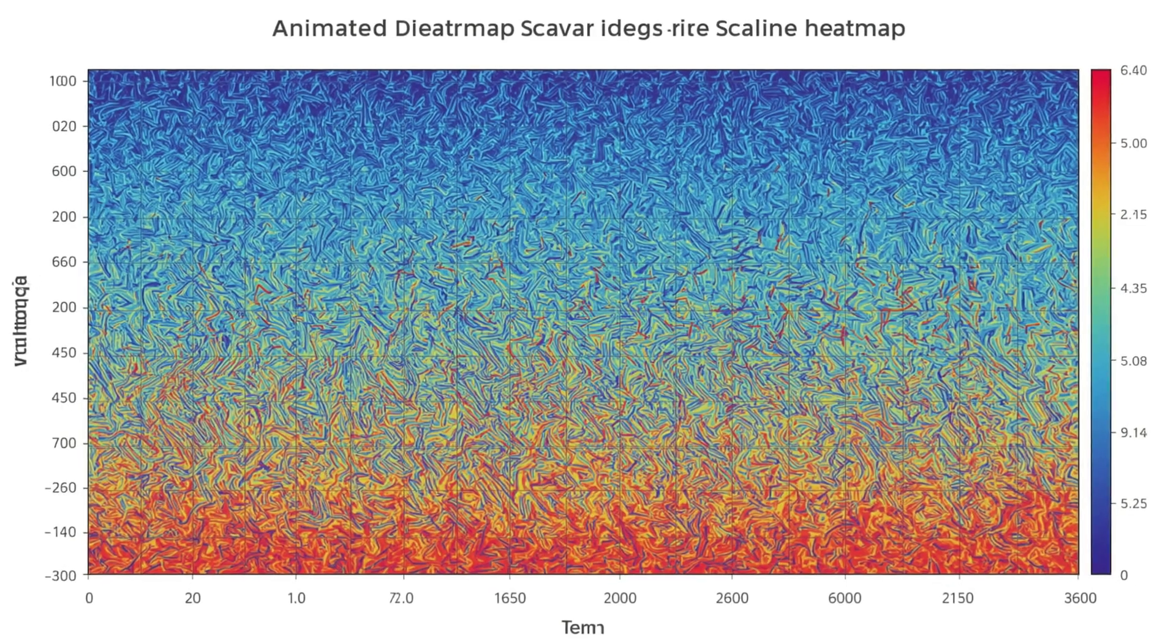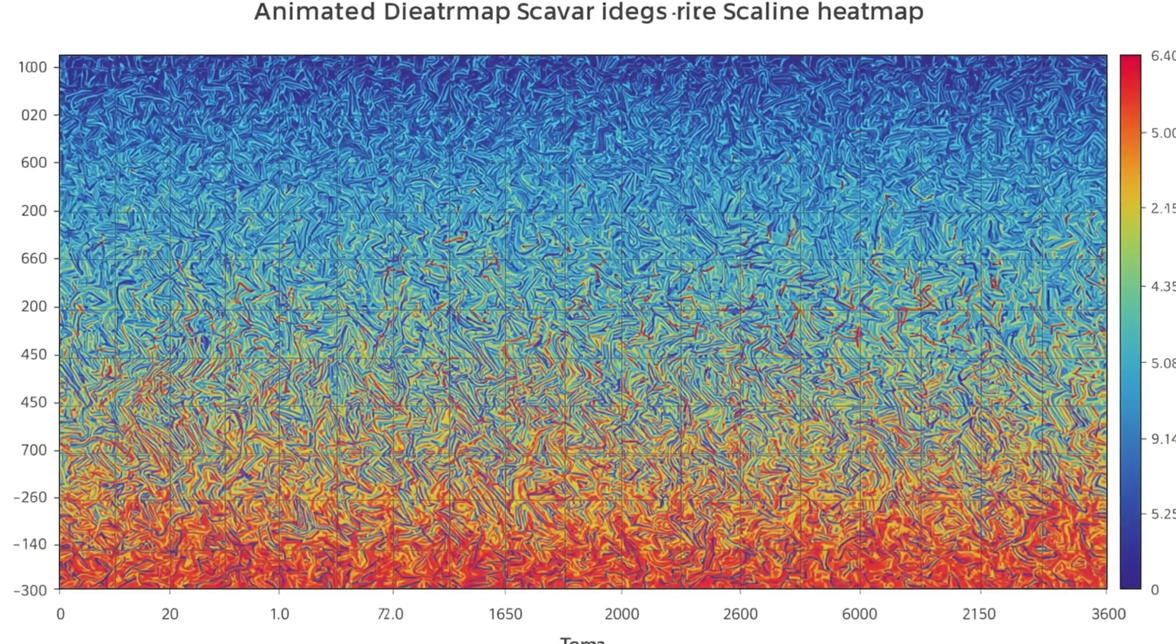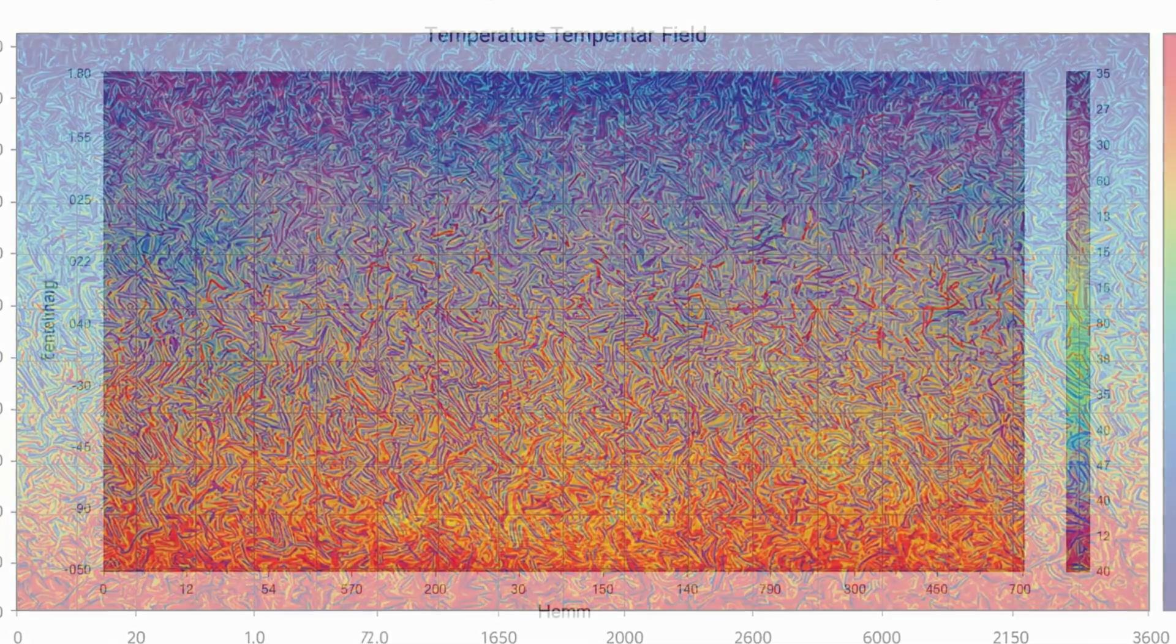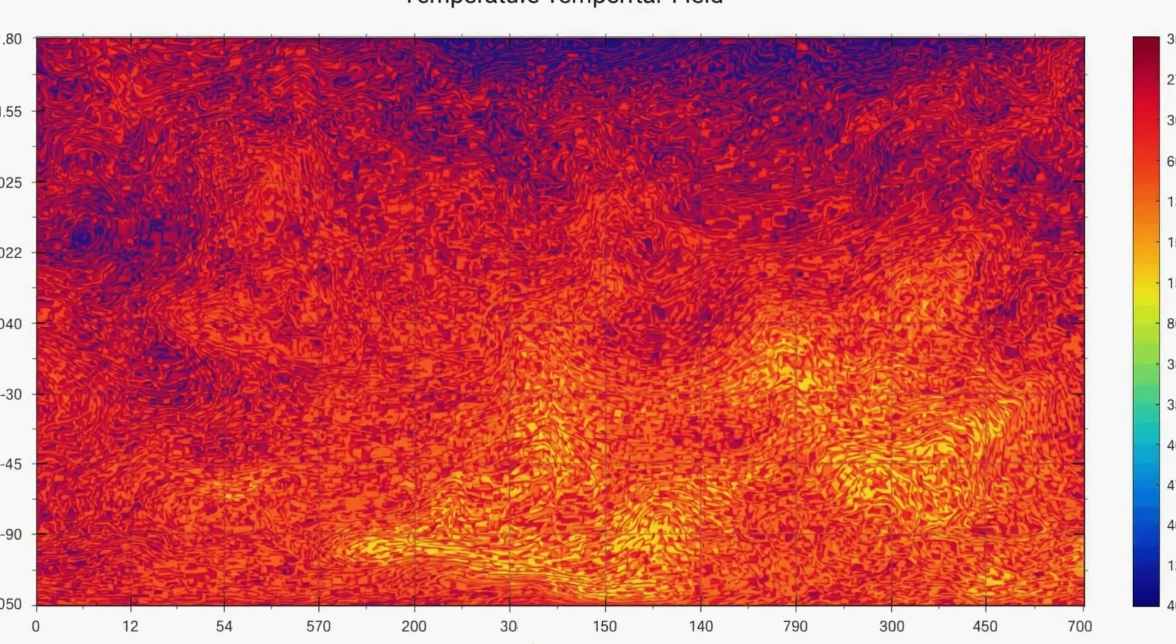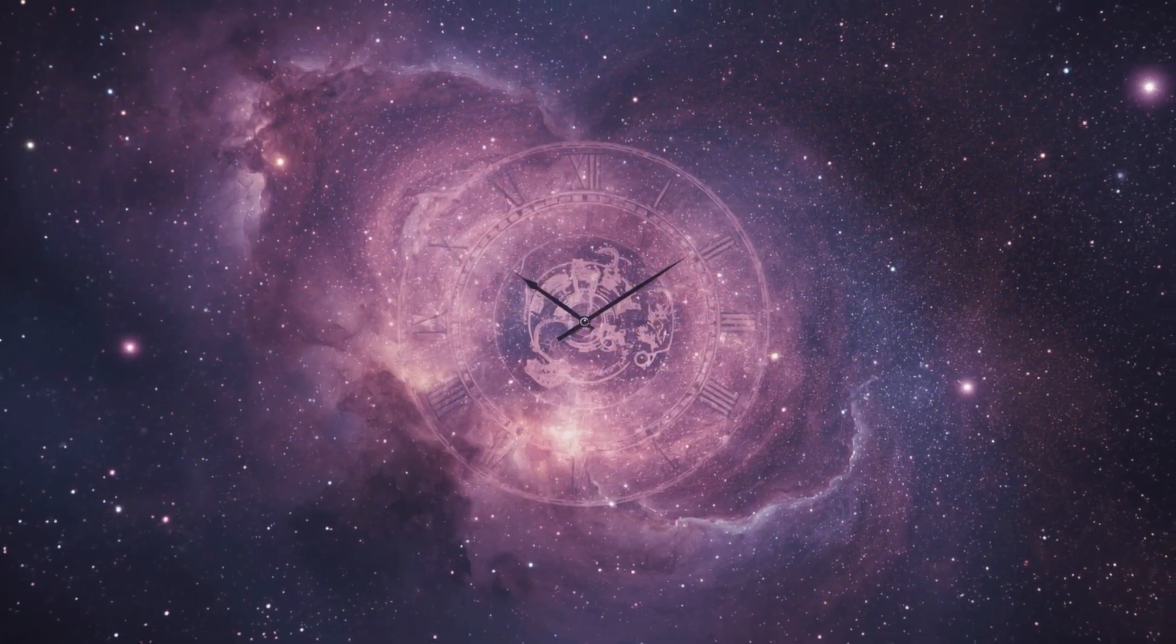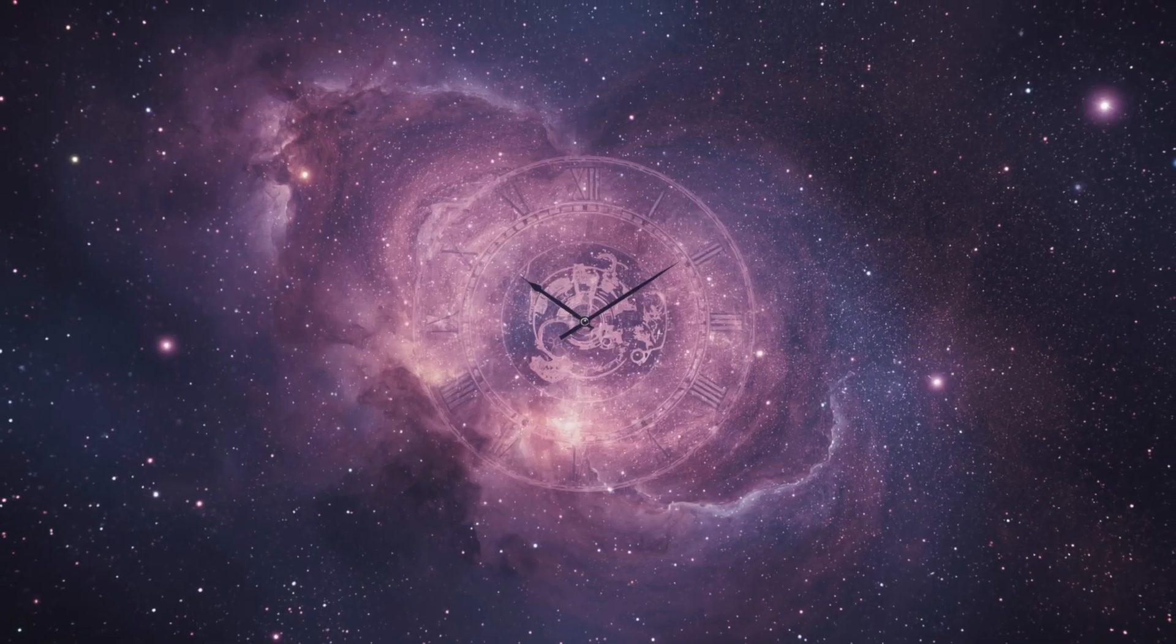A scalar is the most fundamental of all quantities. It has magnitude, but no direction. Temperature, energy, mass, time, all are scalars, described by a single number that conveys the essence of how much.